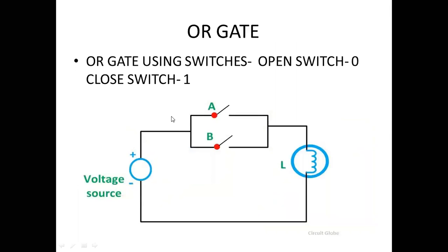For OR gate using switch: open switch represents 0 and closed switch represents 1. In this circuit, voltage source, two switches A and B connected in parallel, and lamp L are used. For OR gate, inputs A and B are connected in parallel.